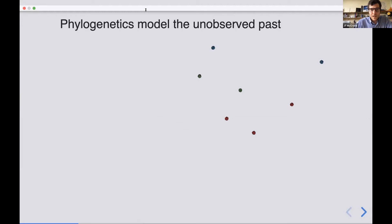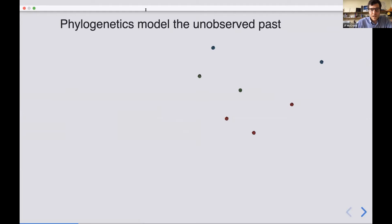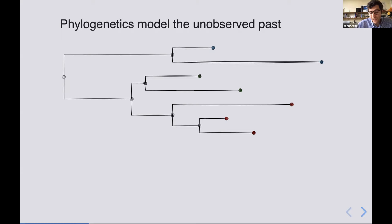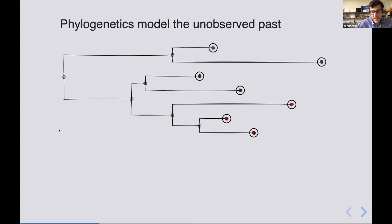So first, what is a tree and why are we interested in trees? Well, phylogenetics help us to model the unobserved past, and so we start with our samples which are shown here as circles just out in space, and what we really want to know is how these samples relate to each other genetically and through time. And so again, just here are the samples, these are the sequences that we have from individual cases represented as external nodes or tips on the phylogeny.